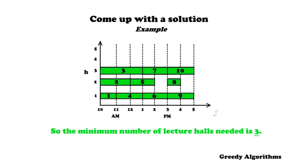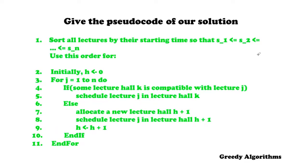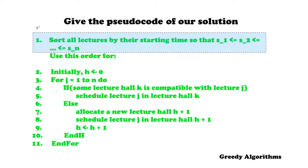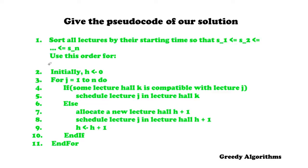Let's look at the pseudocode. First, we sort all lectures by their starting times so that s_1 ≤ s_2 ≤ s_3, and so on. Then we initialize h to 0. For j from 1 to n: if some lecture hall k is compatible with lecture j, we schedule lecture j in hall k. If not, we allocate a new lecture hall h+1, schedule lecture j there, and increment h by 1. This is exactly what we did in the example.